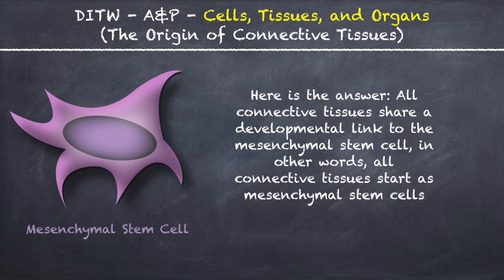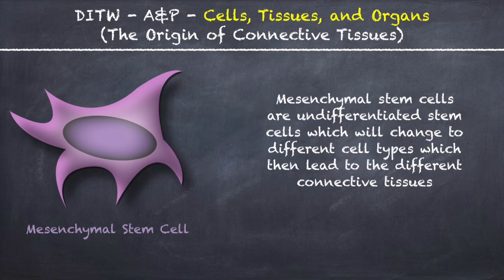Here's the answer. All connective tissues share a developmental link to the mesenchymal stem cell. In other words, all connective tissues start as mesenchymal stem cells. Mesenchymal stem cells are undifferentiated stem cells which will change to different cell types, which then lead to the different connective tissues.